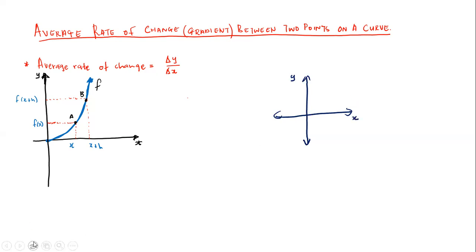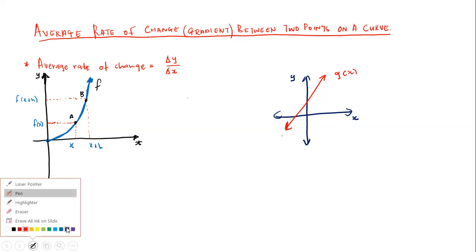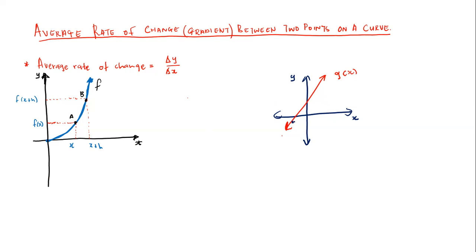Let me draw a linear function on this Cartesian plane. I'll call this linear function graph of g of x. On this linear function I have various points — I'll call them point A, point B, point C, and point D. There are many points on this function; I'll just consider these four points on this linear function.